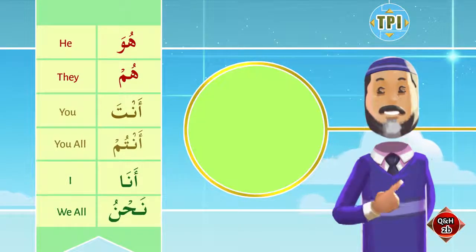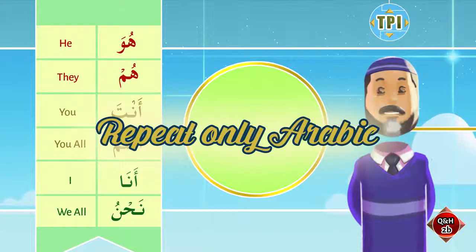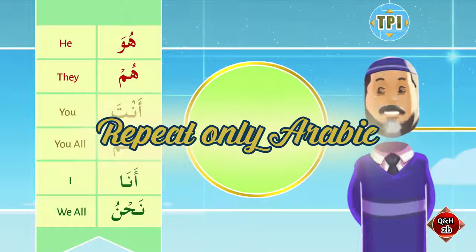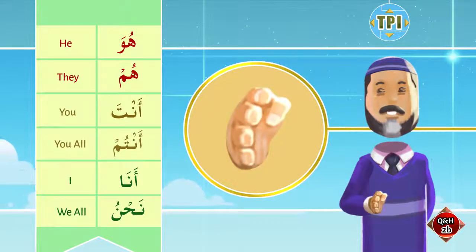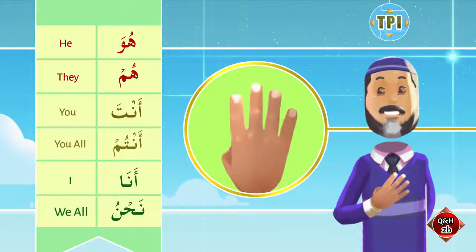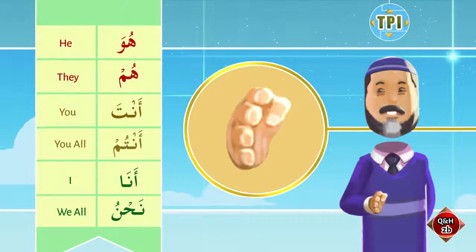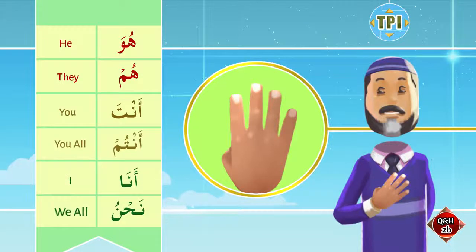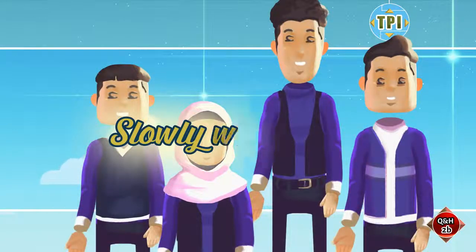Now let us repeat only Arabic — no need for translation. This is the first advantage of TPI: your hand shows what you mean. Repeat after me with actions. Now can you do it slowly with me with actions?